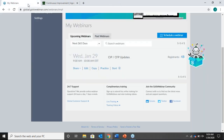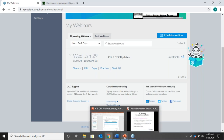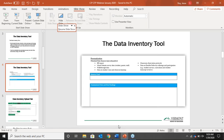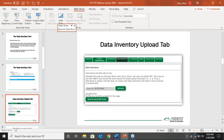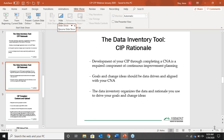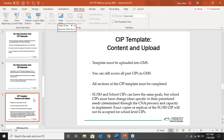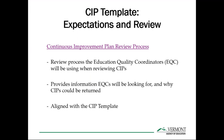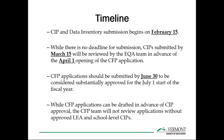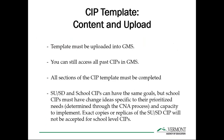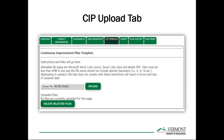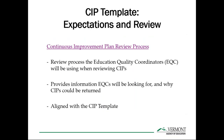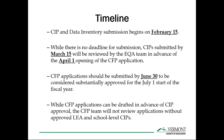Just for clarification — the CIP checklist Josh walked through is effectively a rubric that the AOE will use when reviewing CIPs. We're sharing it now so schools know the criteria in advance. We want to be as transparent as possible to let everybody know upfront what we will be reviewing and why CIPs are returned if that happens.